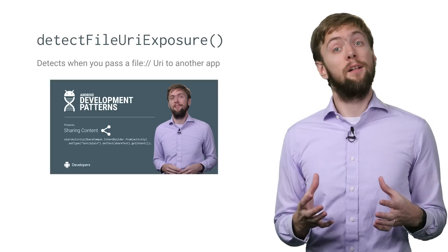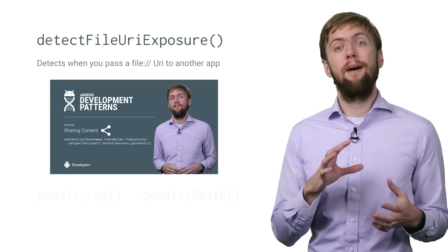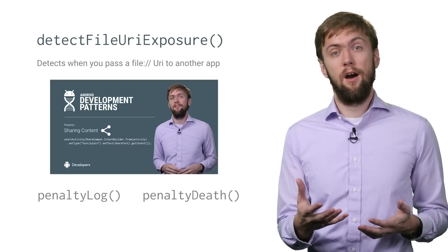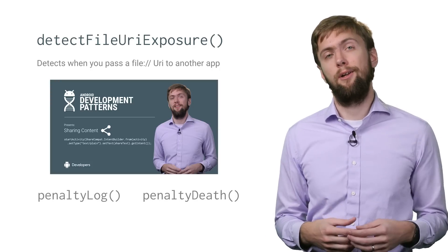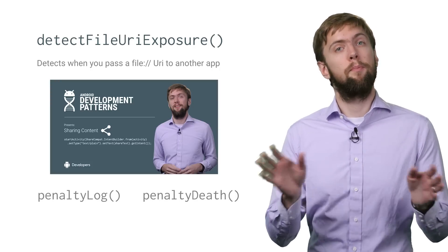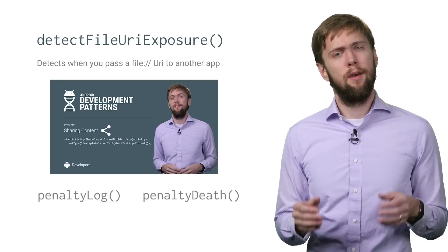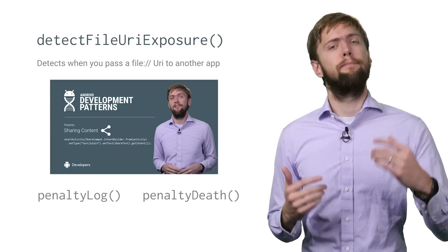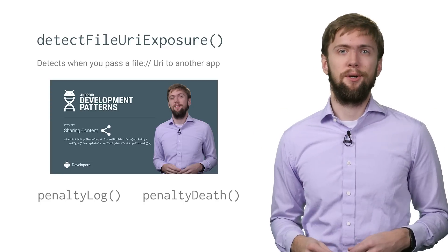Like all of strict mode, you can have it log the issue with penaltyLog or kill your app completely with penaltyDeath. Build better apps or death should be an easy choice, right?